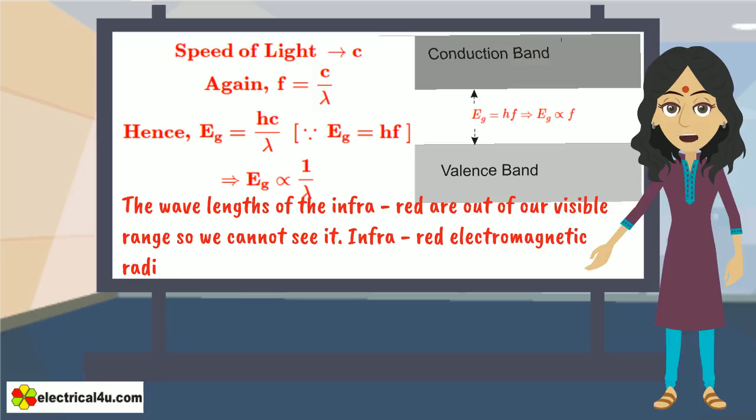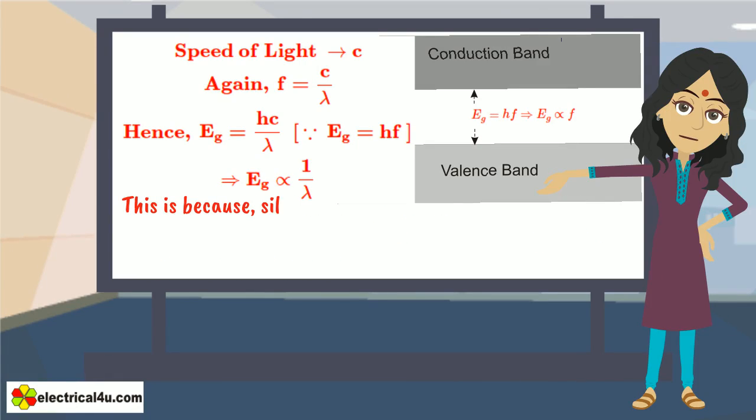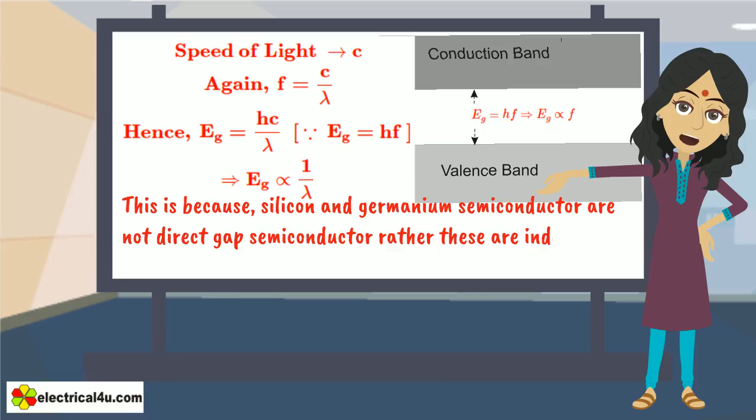Infrared electromagnetic radiation is nothing but heat. This is because silicon and germanium semiconductor are not direct gap semiconductors. Rather, these are indirect gap semiconductors.